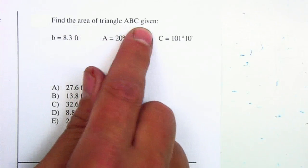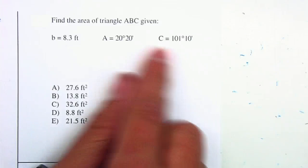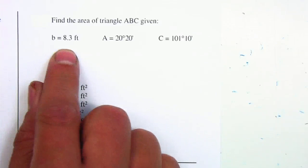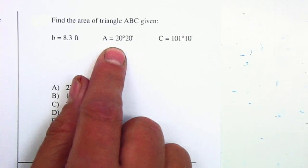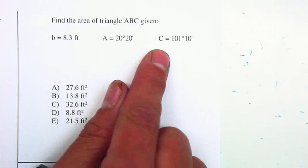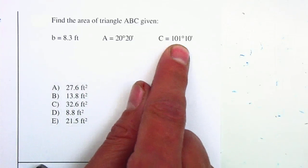Find the area of triangle ABC given the following information: side B is 8.3 feet, angle A is 20 degrees 20 minutes, and angle C is 101 degrees 10 minutes.